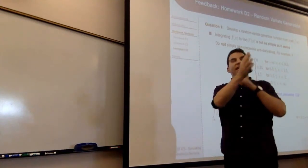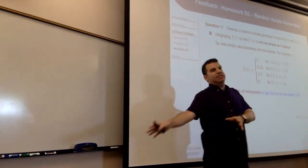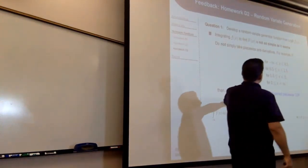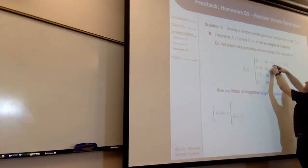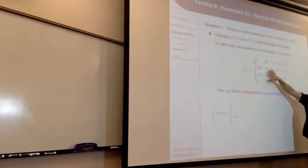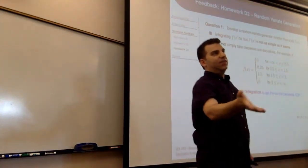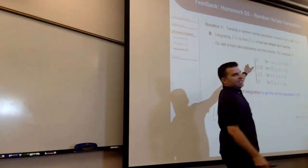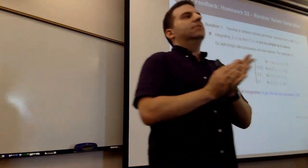Whether a negative square root is correct or incorrect depends on what the PDF says. It would be incorrect if the PDF is defined only on positive values but you're getting negative numbers out. But if the PDF has density in negative values, you must get negative numbers. For the example on screen, outcomes go from 0 up to a positive number, so the random variate generator should never produce negatives.